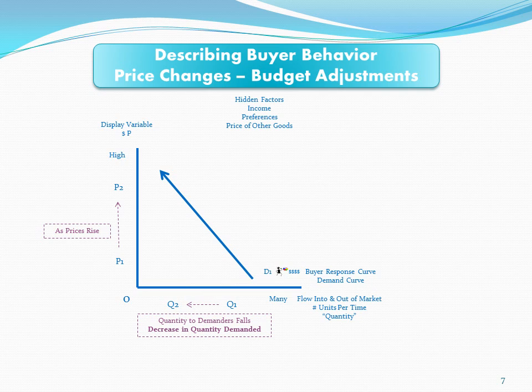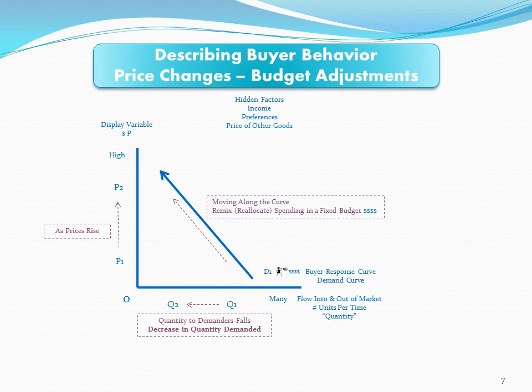It's a decrease in the flow demanded by buyers. The language we use is that as prices rise, the quantity demanded falls — there's a decrease in quantity demanded. What this depicts is that as prices rise, you're moving along the demand curve. That is your behavior over your budget: as the price rises, you're reallocating or remixing your budget. You'll buy less of any given product as the price goes up in order to get the most out of your given income.